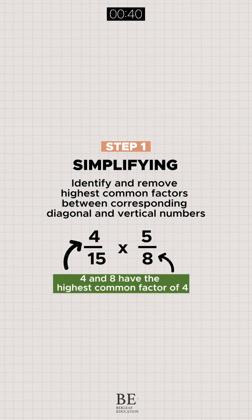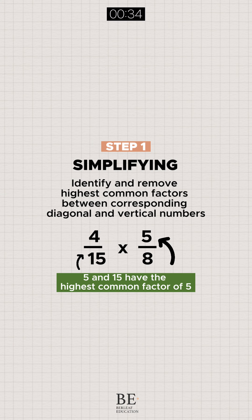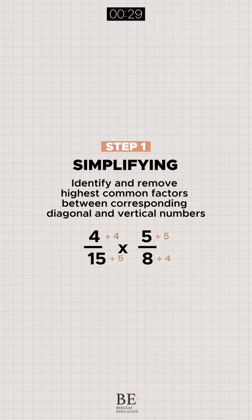In this example, we can see that 4 and 8 have the highest common factor of 4, while 5 and 15 has that of 5. These highest common factors are removed by way of division.